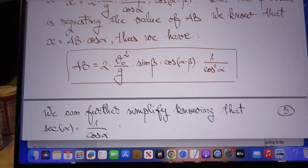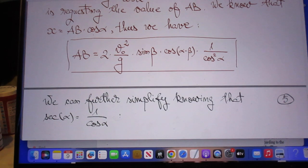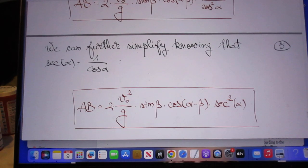The sine beta is in there, cosine alpha minus beta, one over cosine squared. He can even simplify that a little further because he knows that the secant of alpha is one over cosine alpha, then you come with this result.